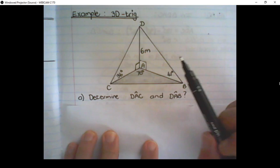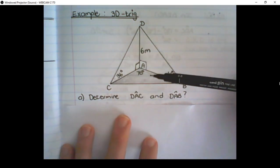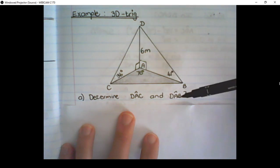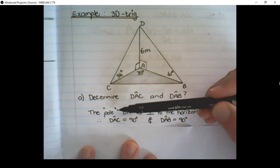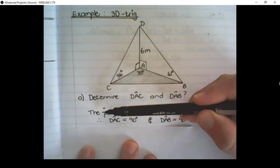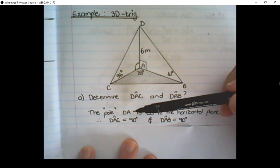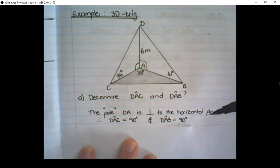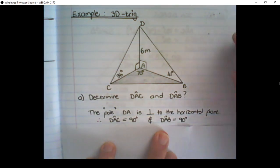A question that can be asked on this diagram is, determine the angle size of DAC and DAB. And as just discussed, the pole, remember this can represent anything else, but in this case the pole DA is perpendicular to the horizontal plane, as just explained. So therefore, the angle DAC is equal to 90 degrees, and angle DAB is equal to 90 degrees.